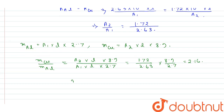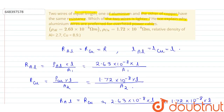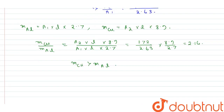From here we can see that the mass of copper is greater than the mass of aluminum. Therefore, since the mass of aluminum is less than copper, the aluminum wire is lighter. For the next part of the question — explaining why aluminum wires are preferred for overhead power cables — since aluminum wire is lighter and economically lower cost than copper, it is preferred for overhead power cables.